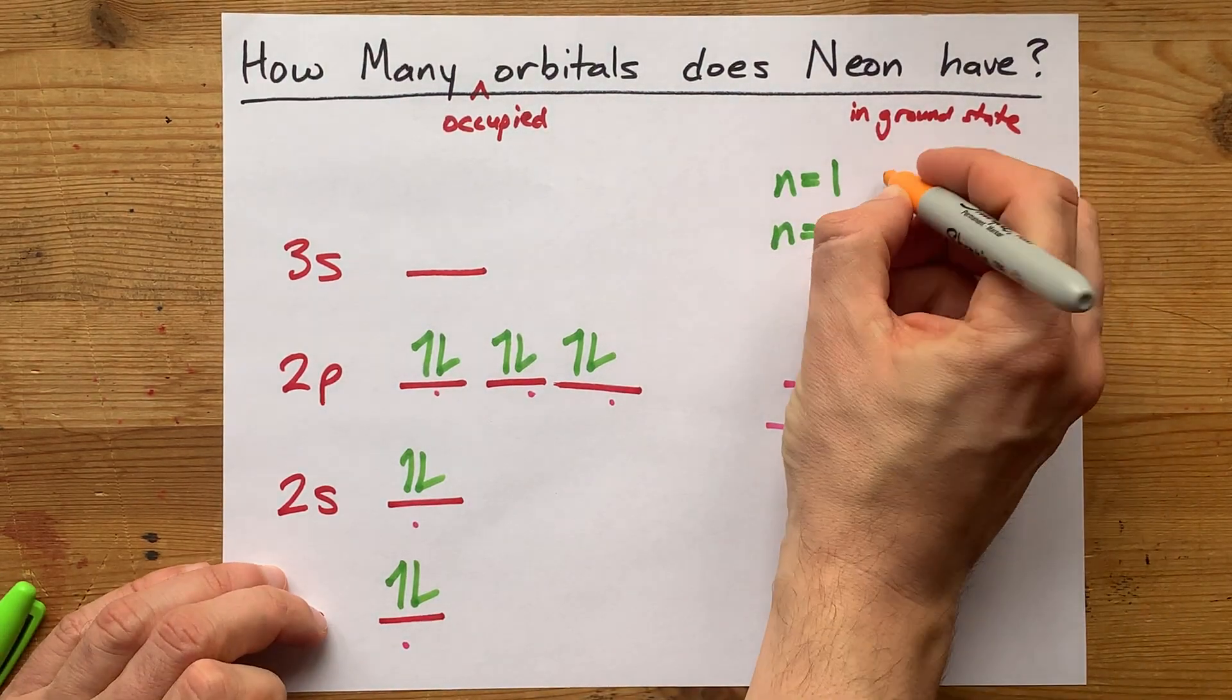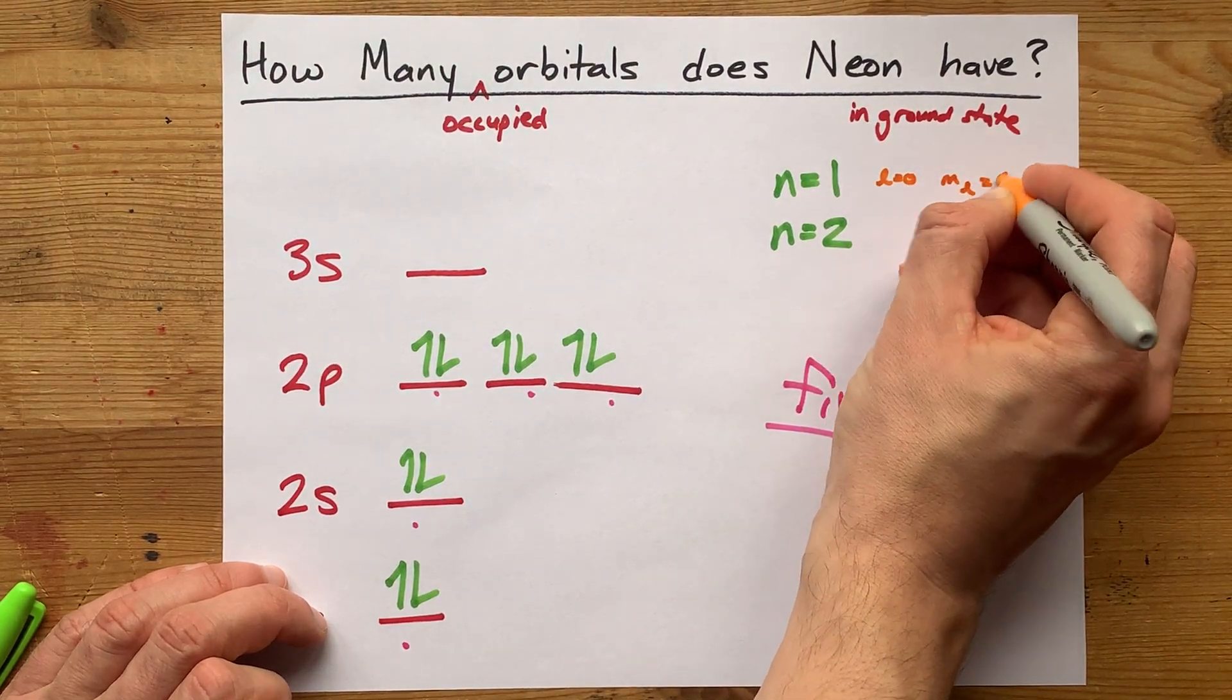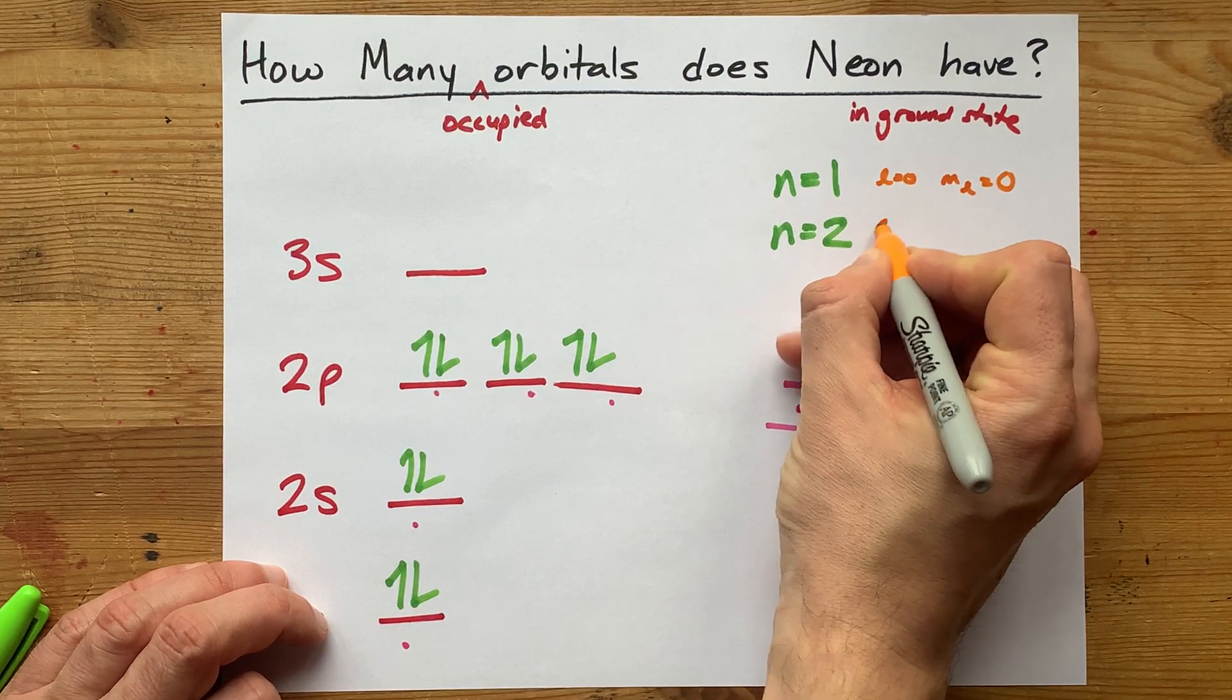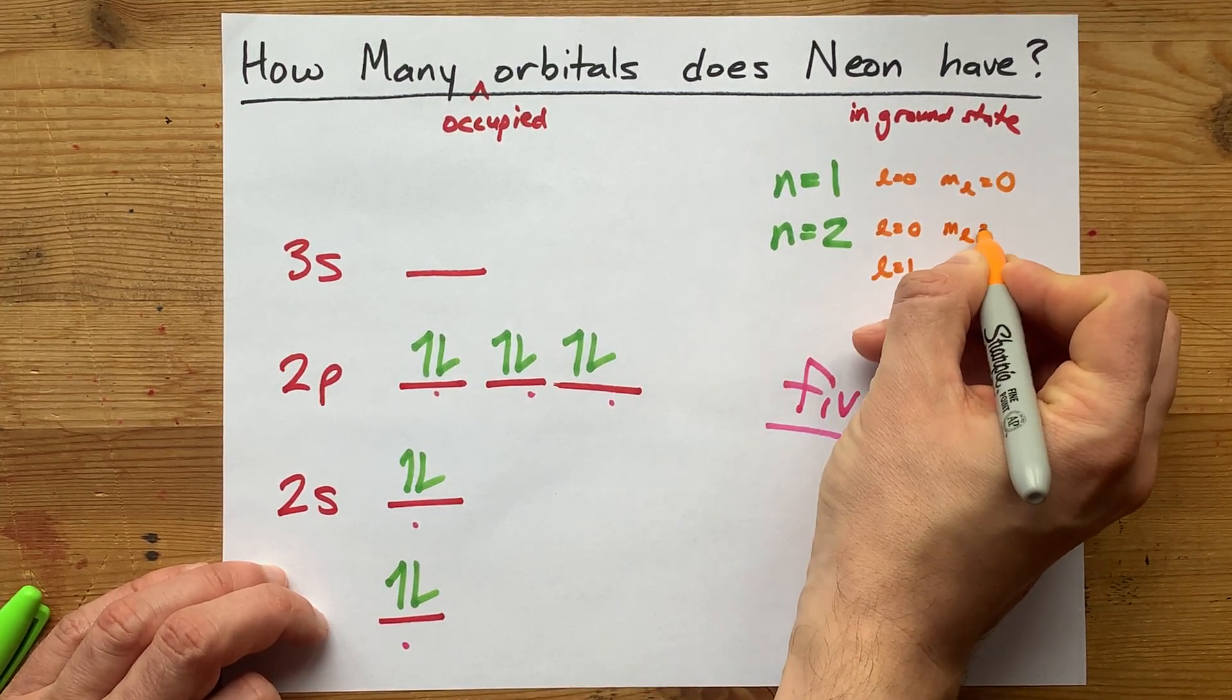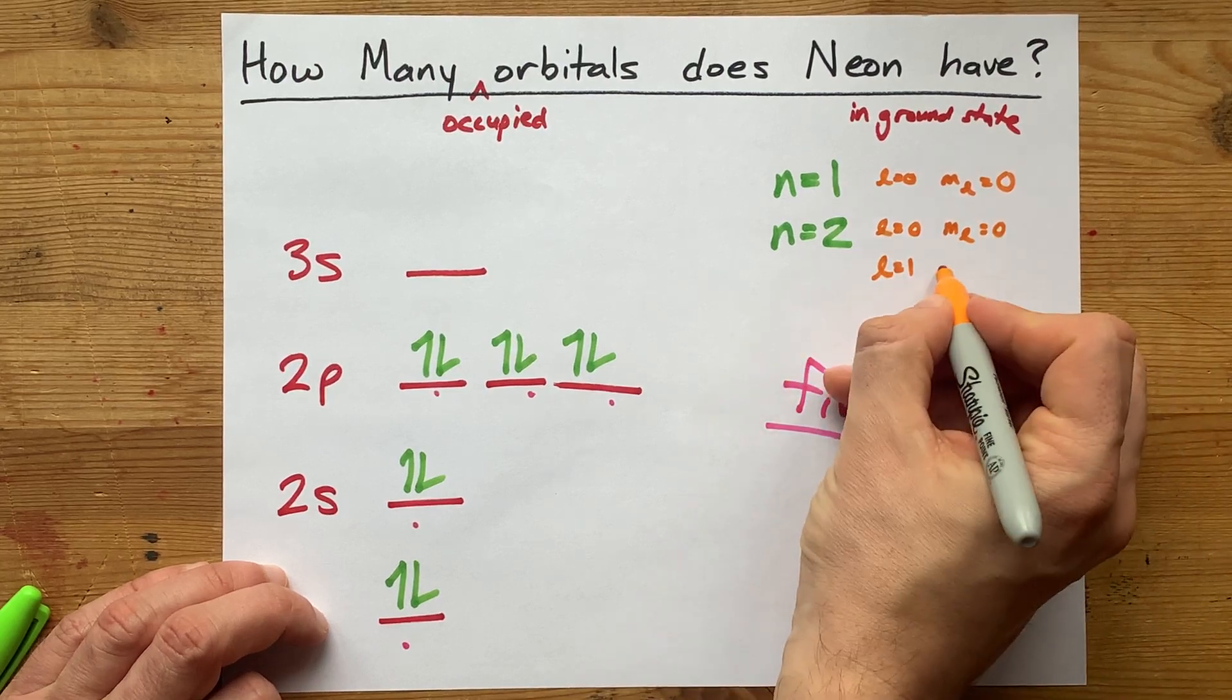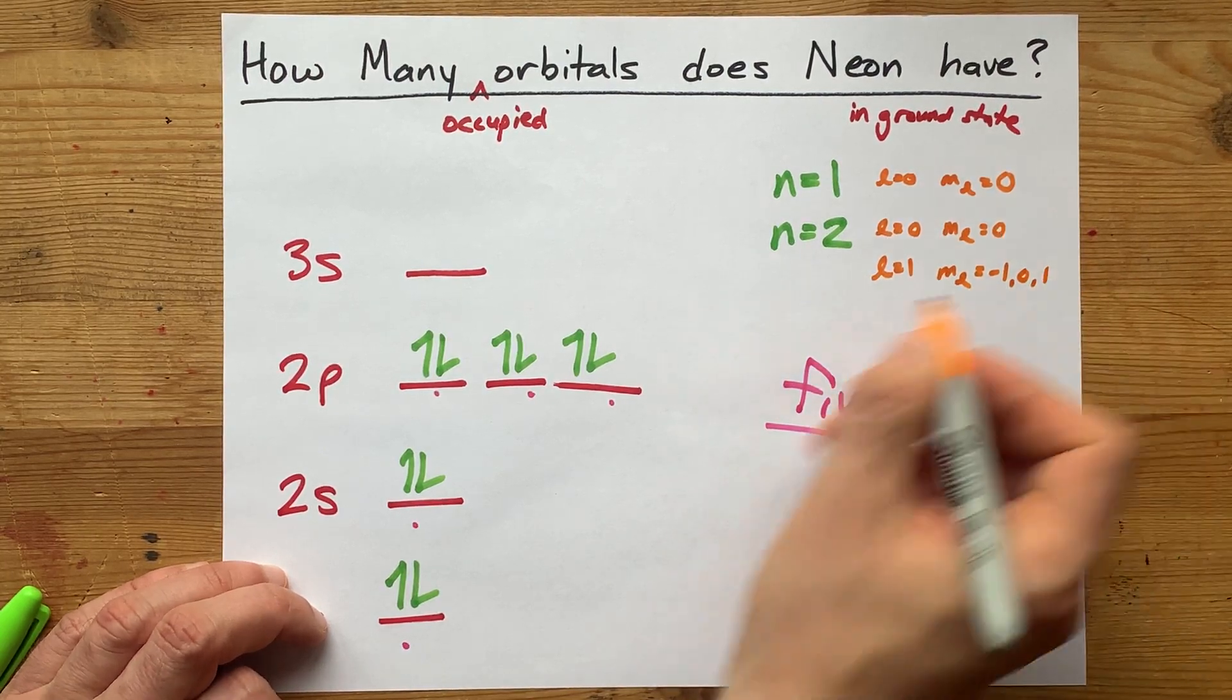When n is 1, L has to be 0, and then ml is limited to 0 as well. When n is 2, L can be either 0 or 1. When it's 0, ml is limited to 0, and when l is 1, ml can be negative 1, 0, or 1.